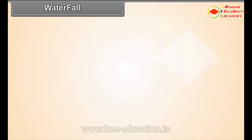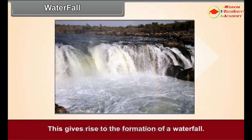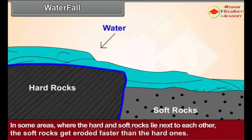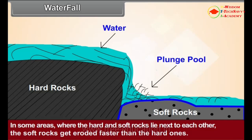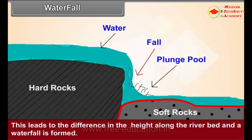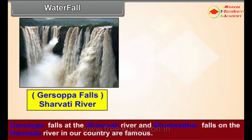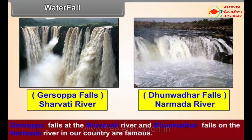Waterfall: Water flowing over a hilly region at times cascades down a cliff, giving rise to the formation of a waterfall. In some areas where hard and soft rocks lie next to each other, the soft rocks get eroded faster than the hard ones. This leads to a difference in height along the river bed and a waterfall is formed. At the bottom of the waterfall, plunge pools are formed. Jog Falls on the Sharavati River and Dhuandhar Falls on the Narmada River in our country are famous.